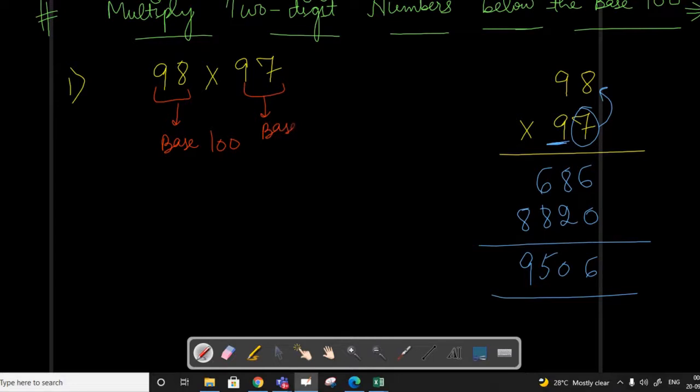Now let's write both numbers in this format: 98 and 97. We know that 98 is just 2 less than 100, and 97 is 3 less than 100. Now let's multiply these two values. That means negative 2 and negative 3 will be multiplied, so we will get positive 6.